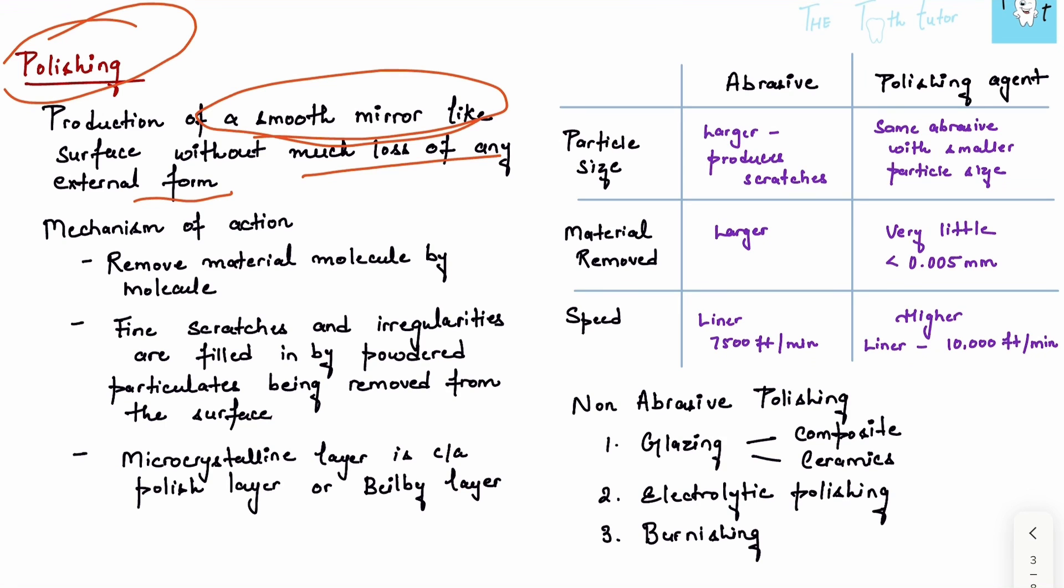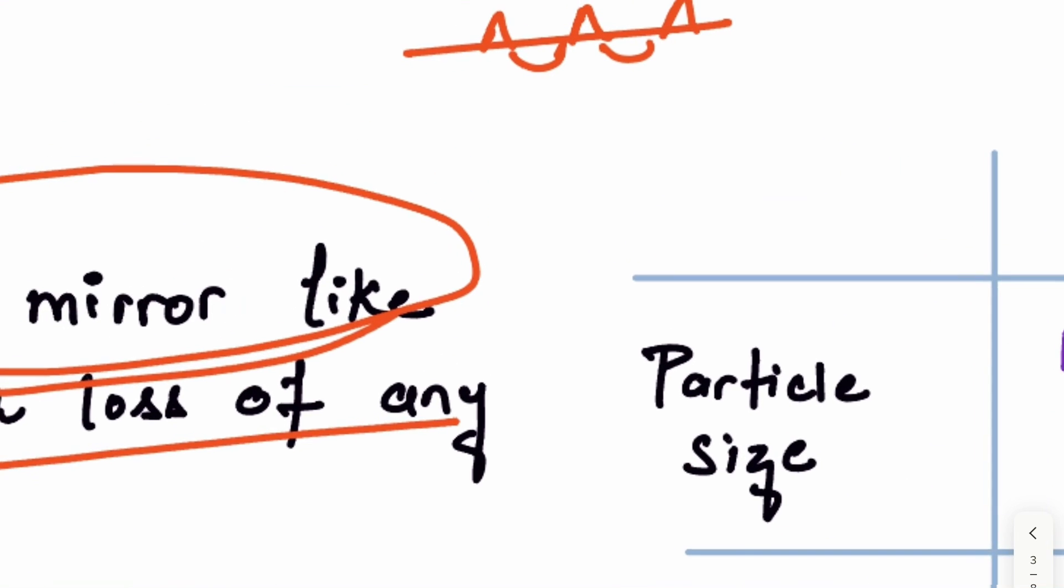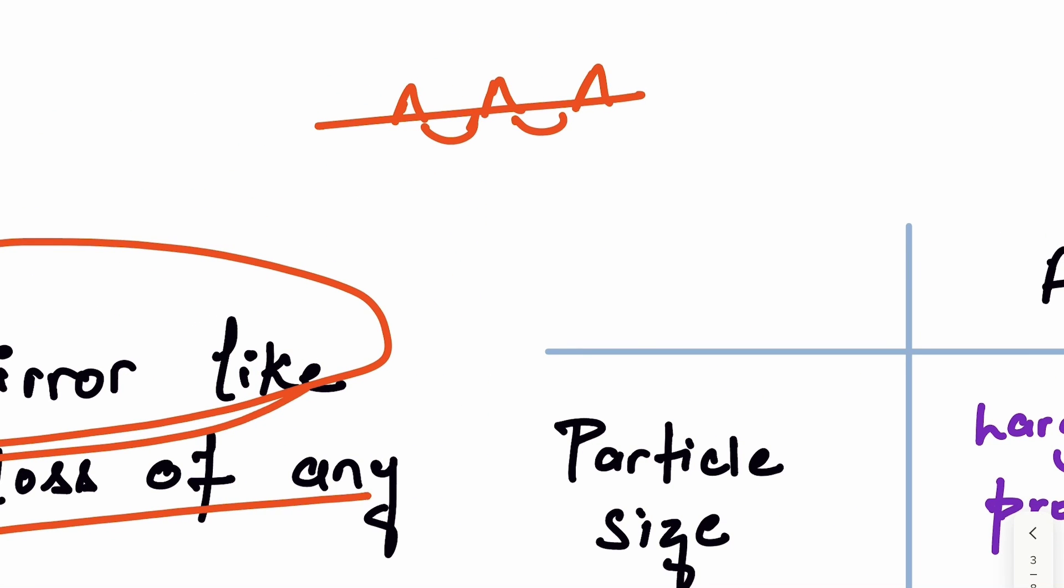Let's say if this was a surface with these irregularities. What abrasion would do - these are the irregularities on this surface - it will remove this part. Now what polishing will do is remove the remaining finer part and also fill in this part.